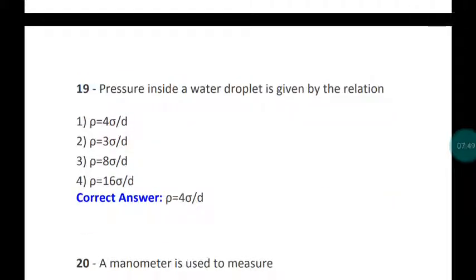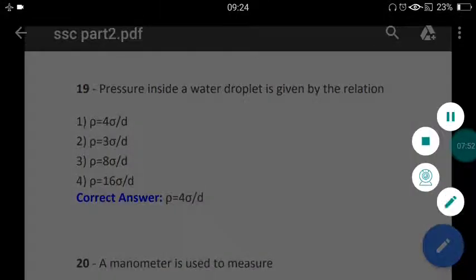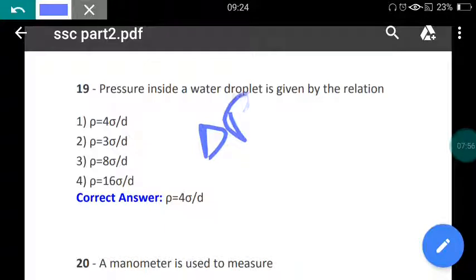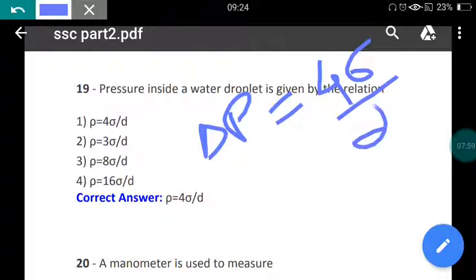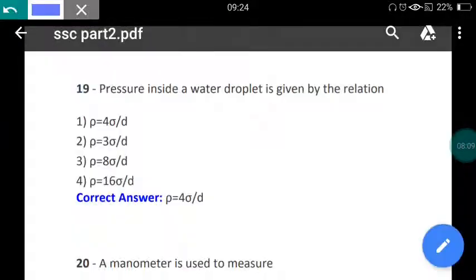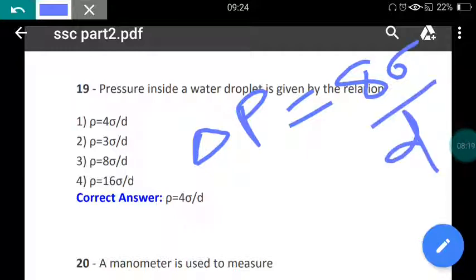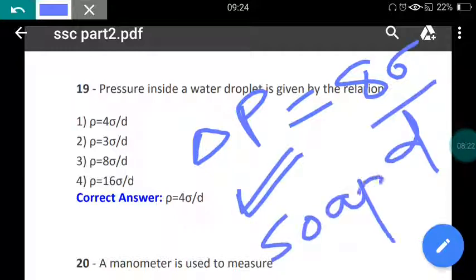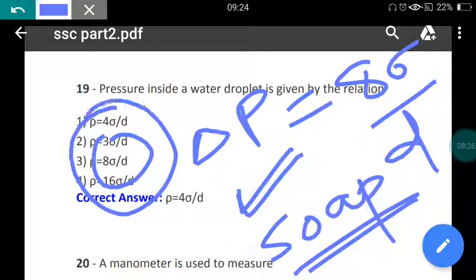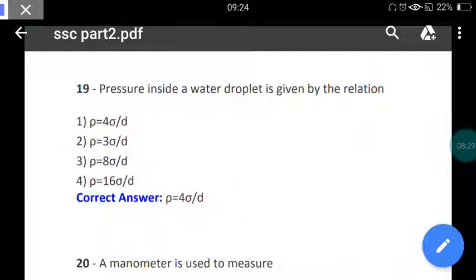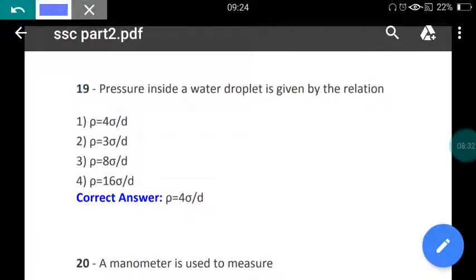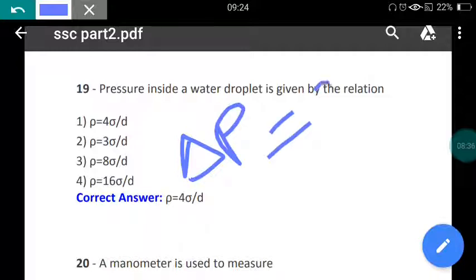Question number nineteen: Pressure inside water droplet is given by what? Delta P which is equal to 4 sigma upon d, where sigma is the surface tension and d is the diameter. This is the equation for water droplets or raindrops. For pressure inside the soap bubble, delta P is equal to 8 sigma upon d. This is the equation of soap bubble - why? Because there are two layers of bubble in soap bubble. And for water jet, the change in pressure inside the water jet is delta P equal to 2 sigma upon d.